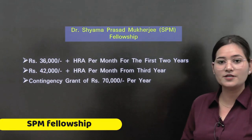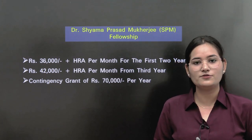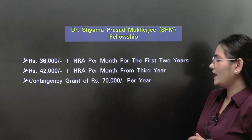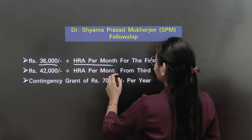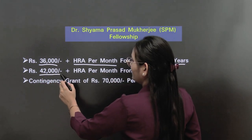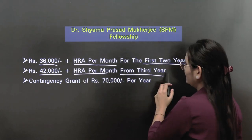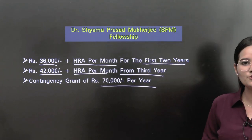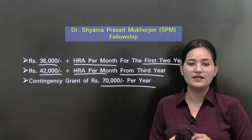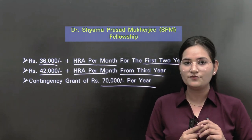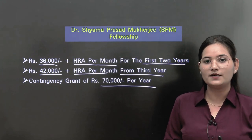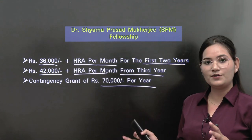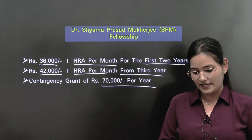Next is SPM Fellowship — Syama Prasad Mukherjee Fellowship — provided to the top 10 CSIR toppers. The amount is ₹36,000 per month plus HRA for the first 2 years, increasing to ₹42,000 plus HRA in the SRF category up to the third year — also for 5 years total. The contingency amount is ₹70,000 per year. Note: after the recent fellowship hike, information was available for JRF and SRF increases, but there is no information yet regarding SPM fellowship increase.